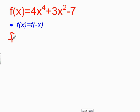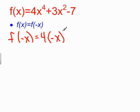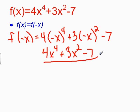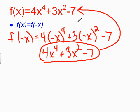So I'm going to find f of negative x and see if it matches. Everywhere I have x in the function, I'm going to substitute negative x in parentheses and then simplify. Negative x raised to an even power is always positive, so I end up with a positive 4x to the 4th. Similarly, negative x squared — that's negative times negative — is positive, so I have a positive 3x squared. And then the negative 7. I notice right away that 4x to the 4th plus 3x squared minus 7 is exactly what I started with. So f of x is equal to f of negative x, and this is an even function.